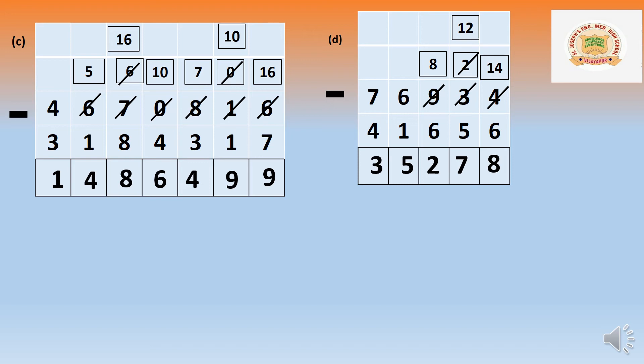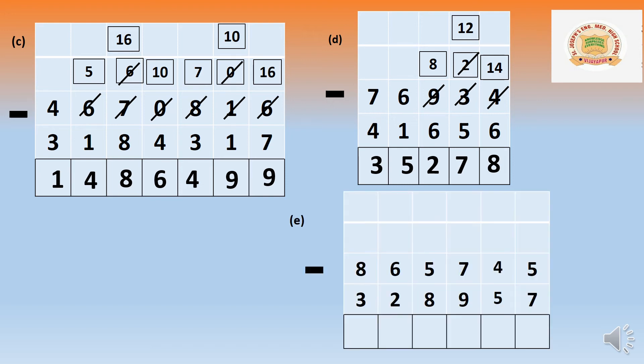Next digits: 8 minus 6 is 2. Then 6 minus 1 is 5. Then 7 minus 4 is 3. Together the answer is 35,278.